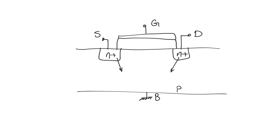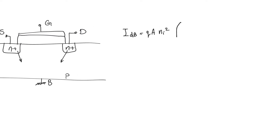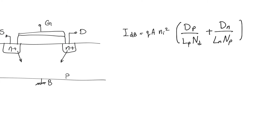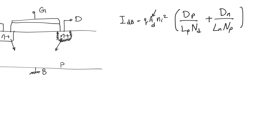We know the equation for the reverse saturation current and how to control it. For the drain-to-body current, it is: q times A times ni² into (Dp / (Lp · Nd)) plus (Dn / (Ln · Na)), where A is the area of the p-n junction — the area of the drain including the bottom and side areas — giving the total p-n junction interface area through which this reverse saturation current flows.